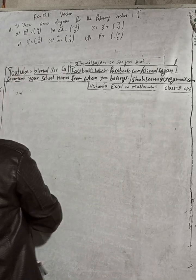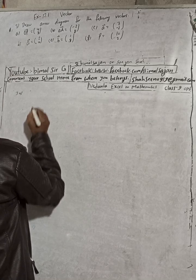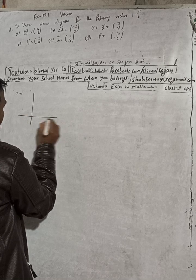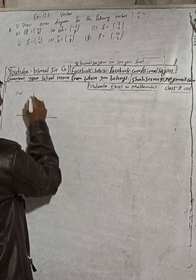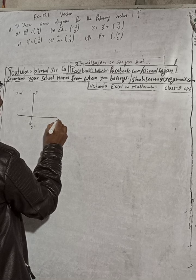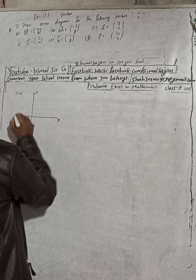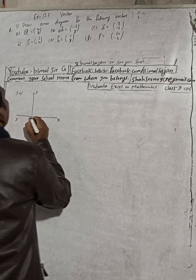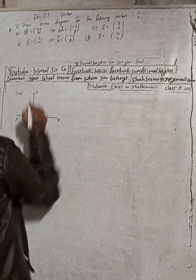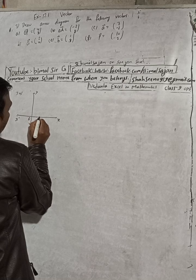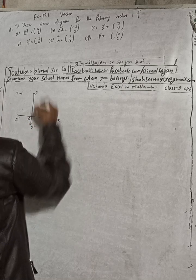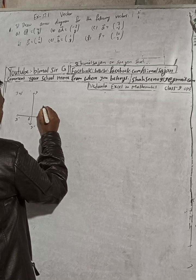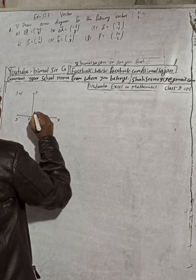For part (a), there is vector OP. To draw the vector diagram, this is our x and y axes. OP vector means from the origin. So from the origin, we go one, two, three, four to the right, and one, two, three, four, five, six, seven, eight upward.